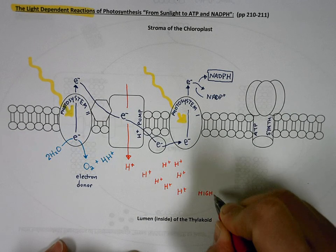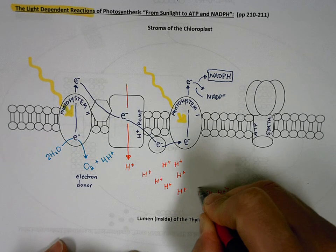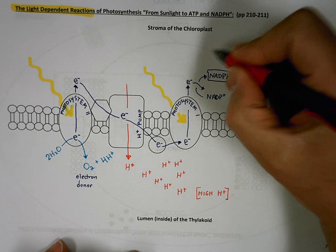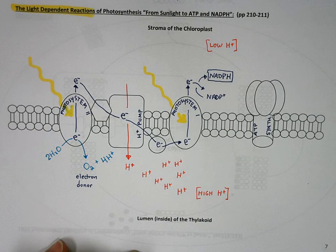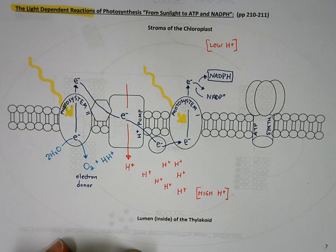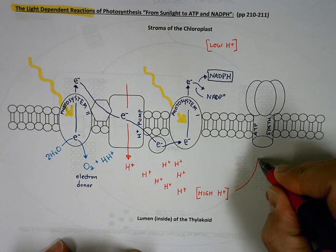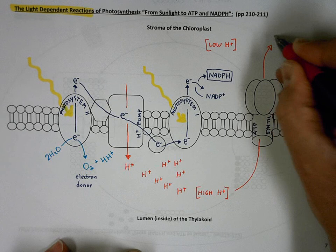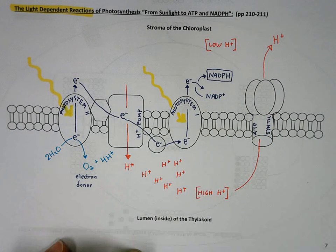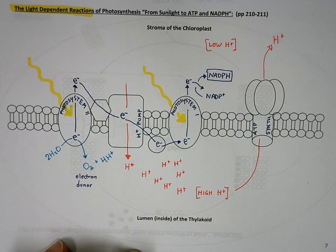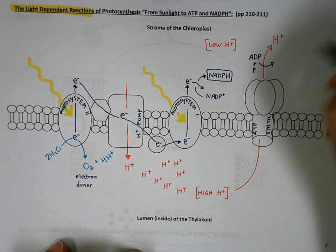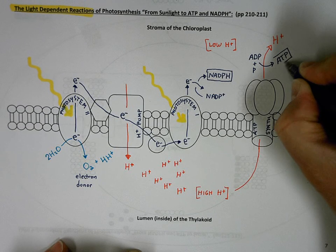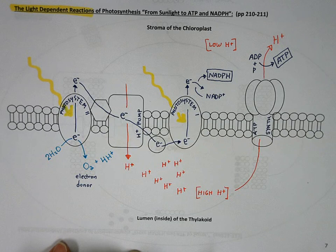You get a high concentration of protons inside of the lumen and you get a low concentration of hydrogen ions out here in the stroma. That creates that potential difference of hydrogen ions across this membrane and by facilitated diffusion then, the hydrogen ions are going to escape the thylakoid and diffuse back out into the stroma through ATP synthase. And when that happens, the energy is used to rephosphorylate ADP back into ATP.